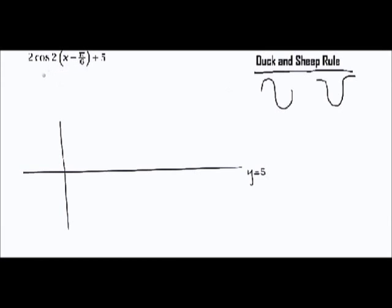First, we draw a coordinate system, and instead of writing y equals zero for the x-axis, we write y equals 5, because the whole cosine function is increased by 5 units.